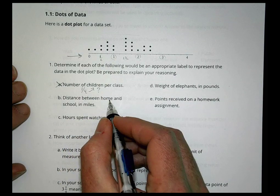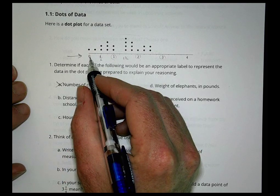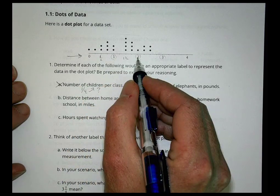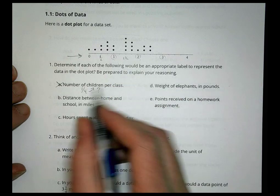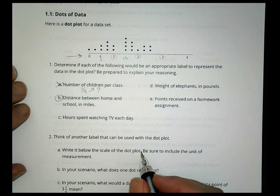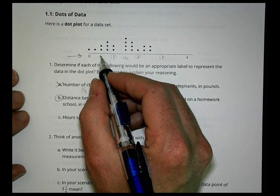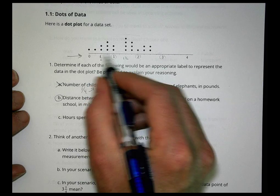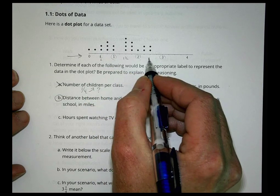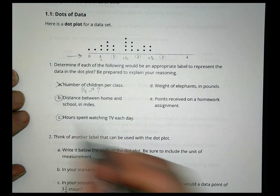How about the distance between home and school in miles? Well, I guess you could be about a mile away from school, or two miles, or even a mile and a half from school, and that would be okay. So that one does seem to make pretty good sense. Hours spent watching TV each day - can you watch half an hour of TV, or an hour of TV, or even two and a half hours of TV? You certainly could, so that would be a good choice as well.